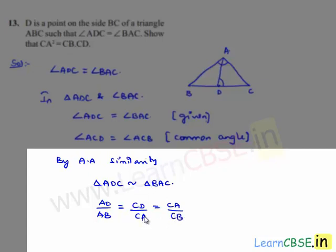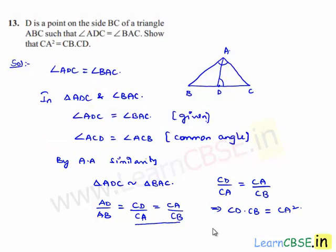Now, in this equality, let us consider the last two terms: CD by CA is equal to CA by CB. By cross multiplication, we get CD into CB is equal to CA into CA, which is CA squared. This implies that CA squared is equal to CB into CD.